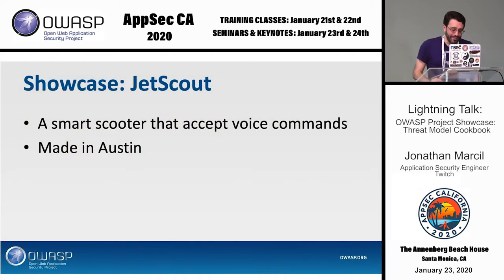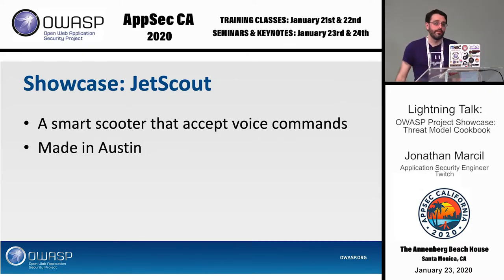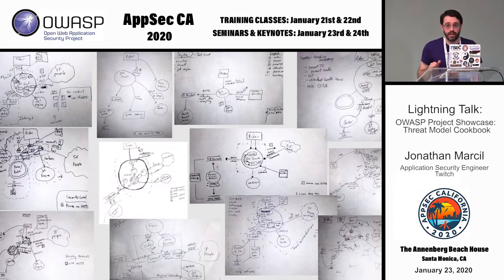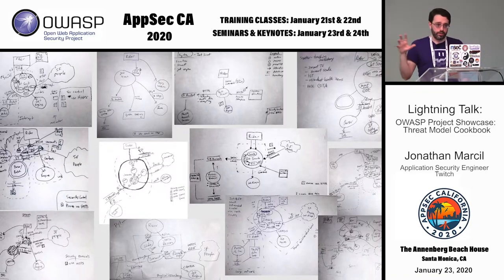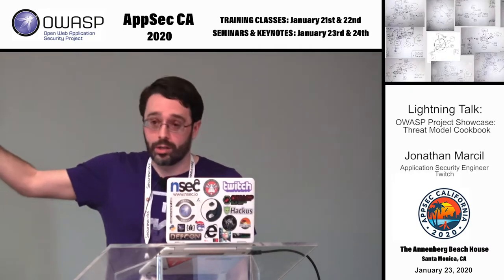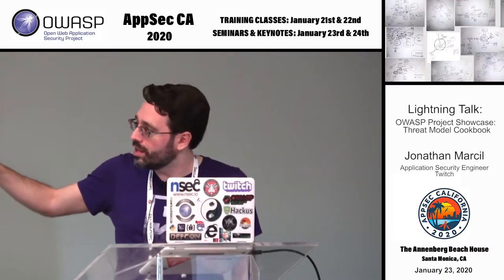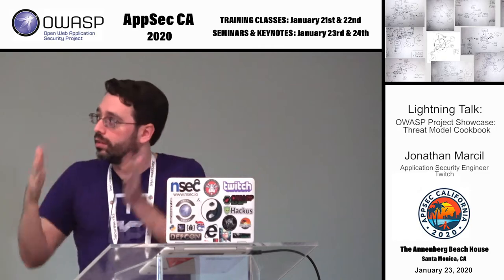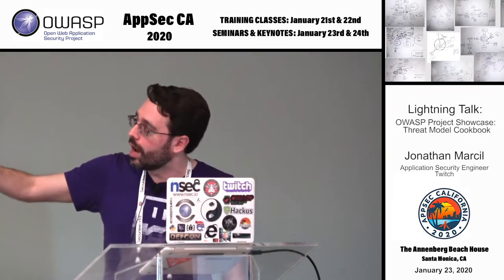JetScout was made in Austin. It's a smart scooter that accepts voice commands. I want to use this as an example of how diverse and different the graphs look when you ask a full room to draw. Almost everybody in the class was drawing at the same time, and it turns out the diagrams all look more or less the same because they are the same system — they were following what I was drawing on the whiteboard, though their drawings are way better than mine.